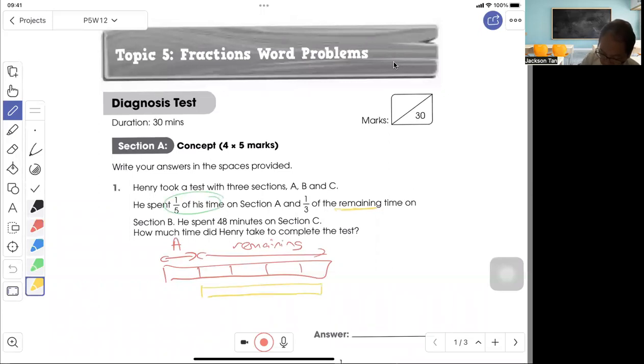I just take this out, cut into three parts, and one-third goes to B. Next, he spent 48 minutes on section C. So here is my section C, 48 minutes.